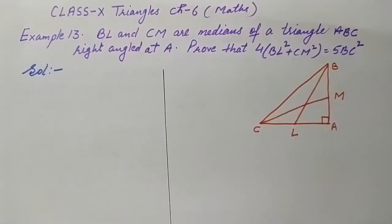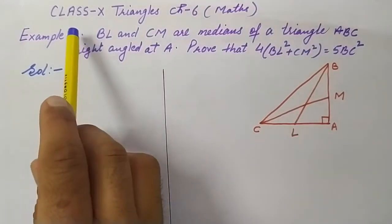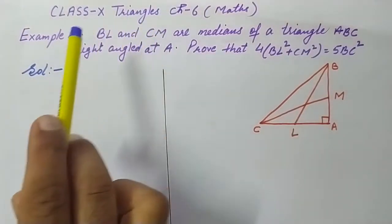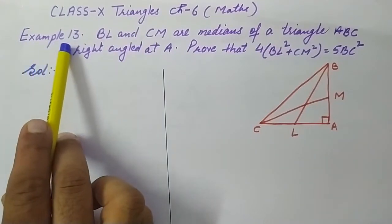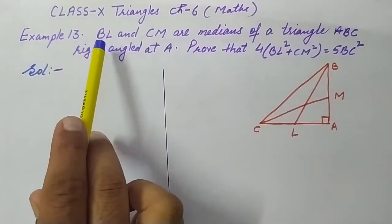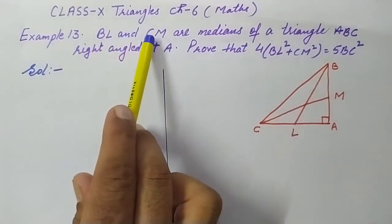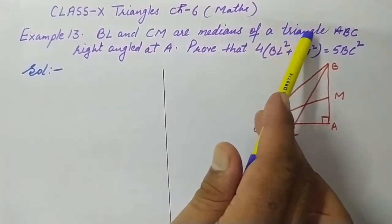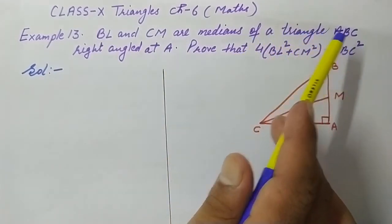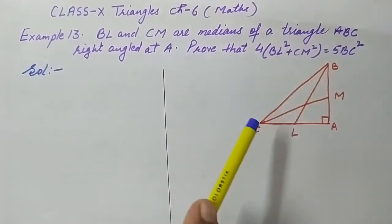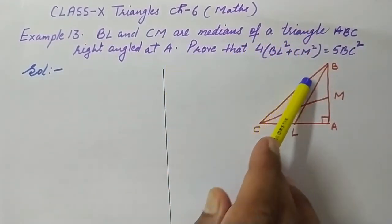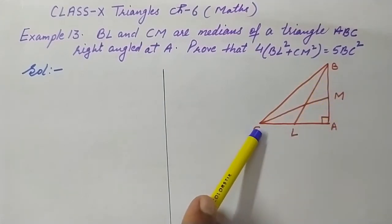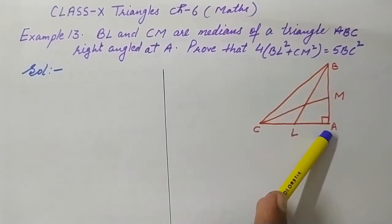Welcome to this YouTube channel. This question is taken from class 10, chapter Triangles — example number 13. BL and CM are medians of triangle ABC, right angled at A. In the figure, triangle ABC is given as a right angled triangle with angle A equal to 90 degrees.